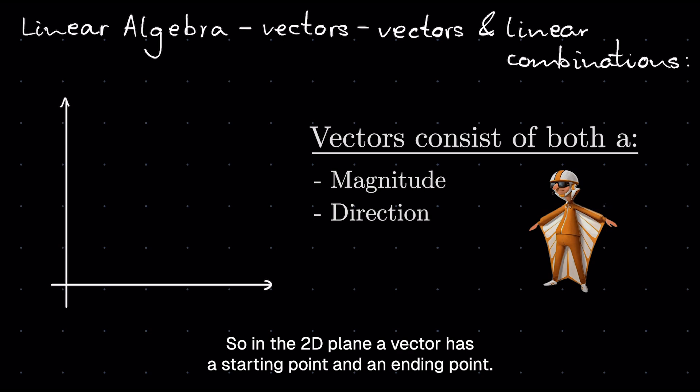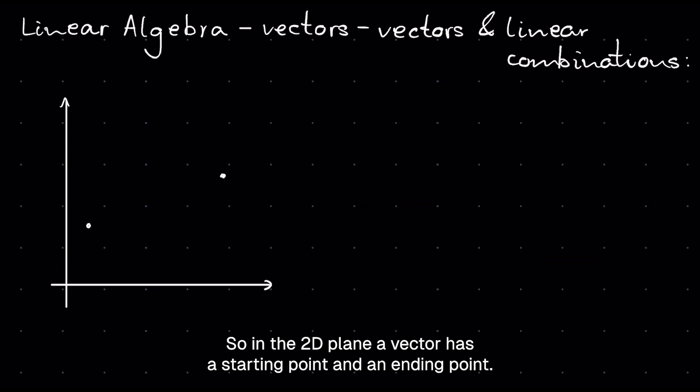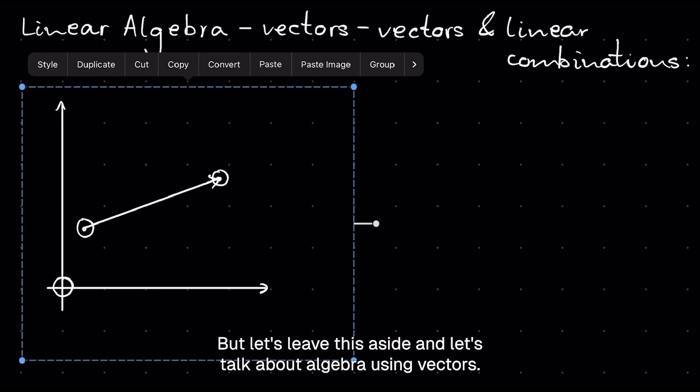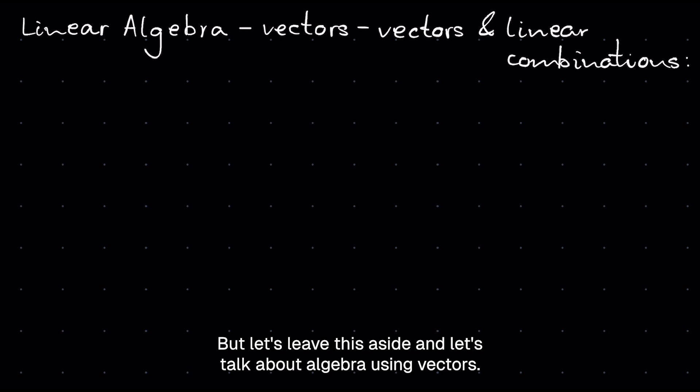So in the 2D plane, a vector has a starting point and an ending point. It doesn't have to start from the origin. It basically indicates the journey from the starting point to the ending point. That's what a vector does. And it's this very simple property of vectors that makes them so special. But let's leave this aside, and let's talk about algebra using vectors.